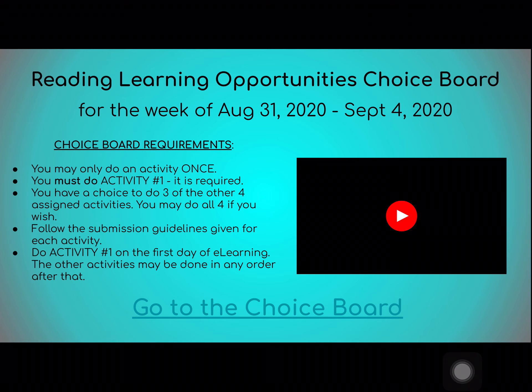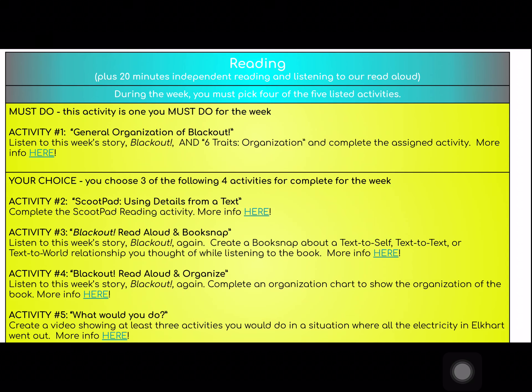The way the choice board works is you look and go to the choice board, and you can see the activities that are available. Listed activity one is a must-do. Activities two, three, four, and five are your choice — you choose three of the four.